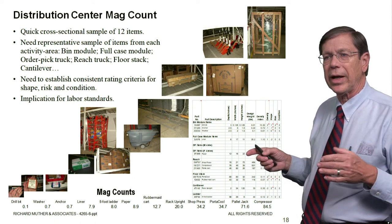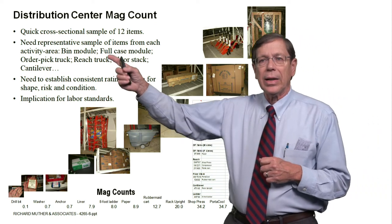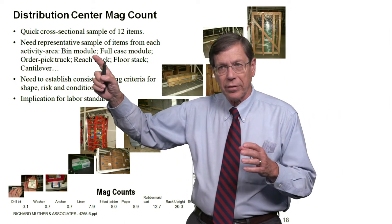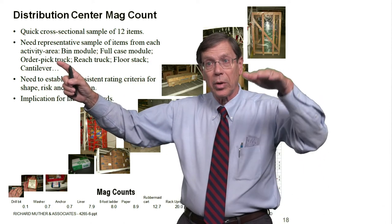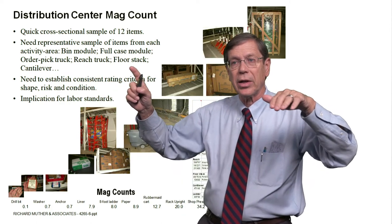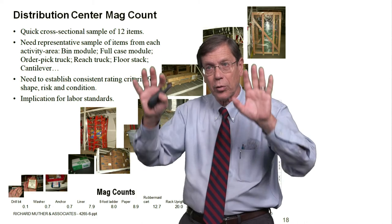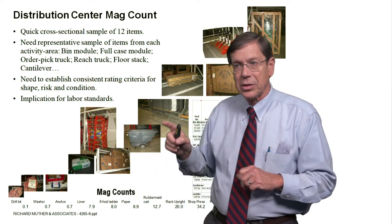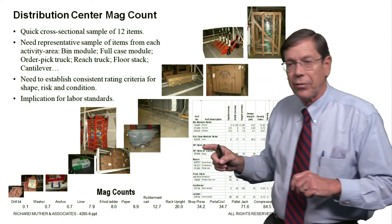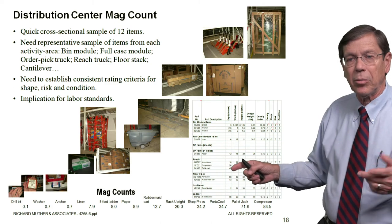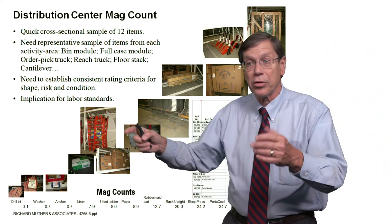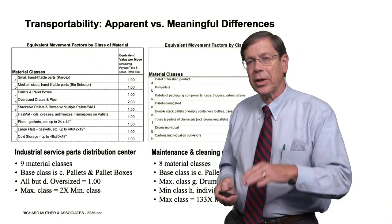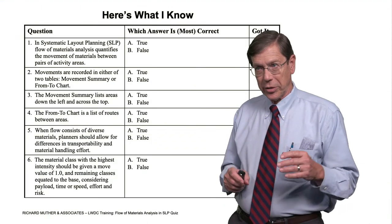So what MagCount does is it looks at the differences in size and cube and shape and so forth, risk and condition. And it puts factors in to adjust up or down from some base unit of cube. And there's a worksheet here in which that was done. And what they ended up doing for layout purposes was to say, I'm going to get a representative sample of the items that are stored in each activity area. My activity areas were bin shelving, full case, order picking truck where we went up in the racks and picked, a reach truck area, and a floor stack area cantilever. So this was layout, remember our four classic layouts. This is layout by storage and handling method. And from each of those, we'll take a sample of the items that are held in there. And we're going to figure out this equivalence using MagCount and multiply by the number of ladders plus the number. So we'll get the actual units, multiply each by its average MagCount and we get a measure. That's all explained in a supplemental reading. And I'll encourage you to go there if that's of interest to you.